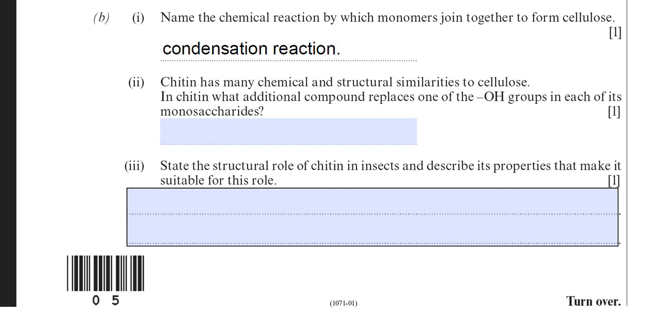Chitin has many chemical and structural similarities to cellulose. In chitin what additional compound replaces one of the OH groups in each of its monosaccharides? Now according to the mark scheme for this question, they will allow amino acid or glucosamine, or even amine or NH2.